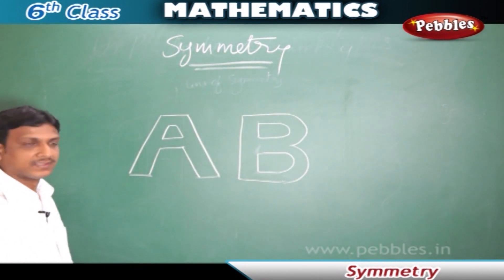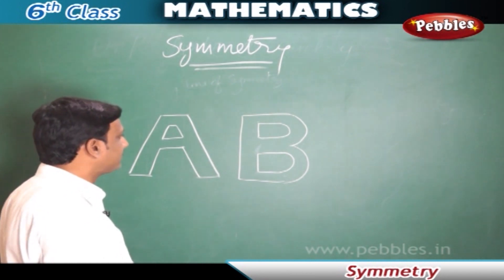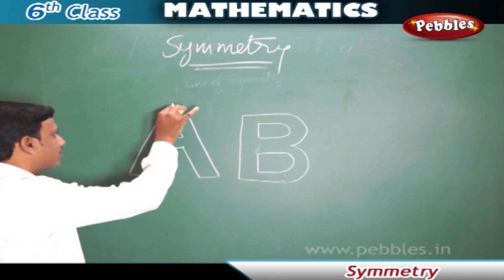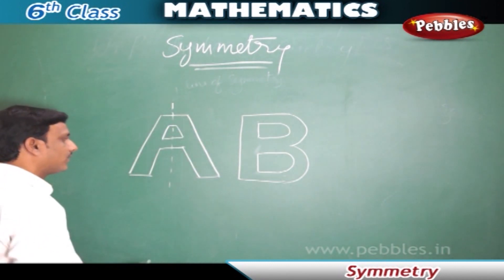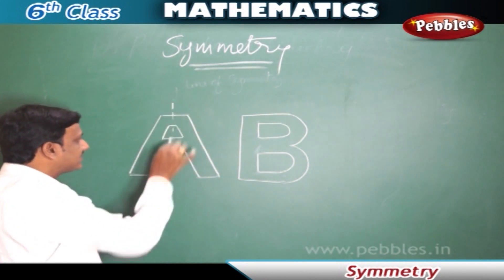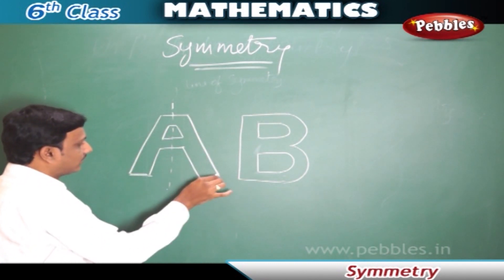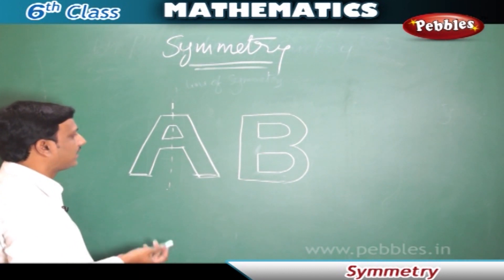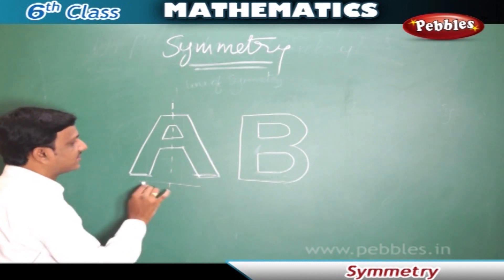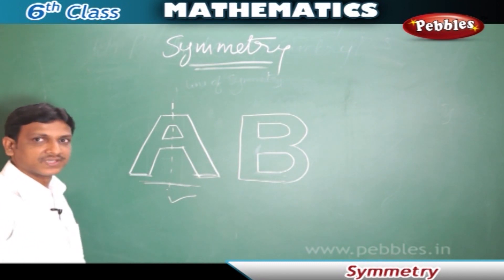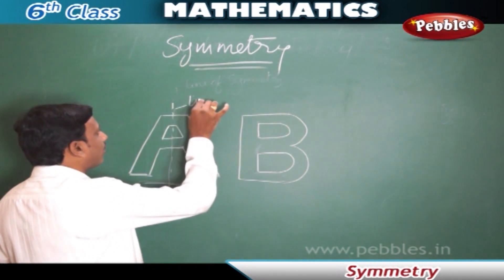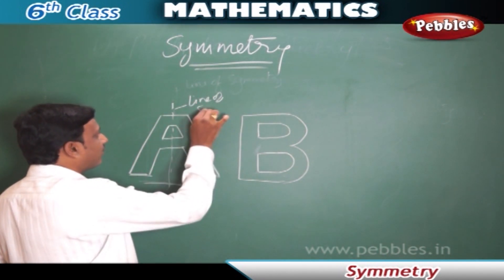Now let us look at these two alphabets and see whether they have symmetry. The letter A — if we draw a line vertically and fold this figure at this axis, we get two identical parts on both sides which are exactly coinciding. So this is a symmetrical shape, and this is the axis of symmetry or line of symmetry of this picture.